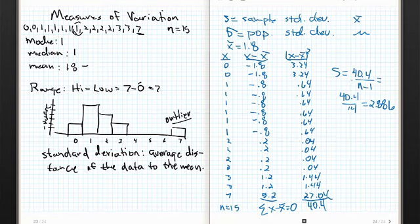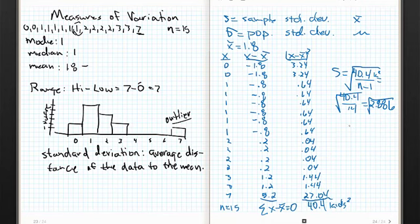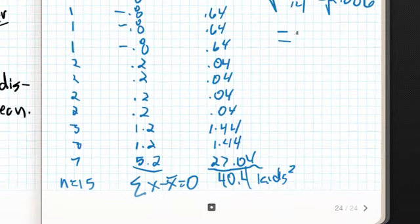I haven't included everything yet. Remember, the standard deviation is the average distance, so the units need to be preserved — we're in kids squared right now, and we need to get back to the original units. So you take the square root of 2.886, and what you get is 1.699. This is now in the same units as our data.